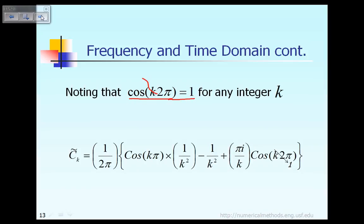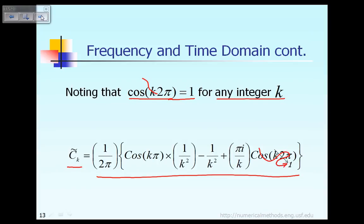Now, the value of cos(kπ) — regardless of the integer index k — takes on specific values that will be used to further simplify the expression for c̃_k.